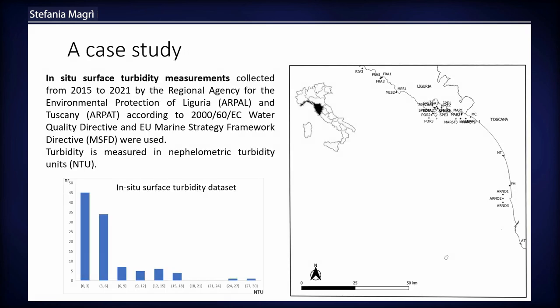The aim of the study was to retrieve turbidity information in our study area, located in the North Tyrrhenian Sea, including the Liguria and Tuscany regions. It is a very complex area from the turbidity point of view, encompassing many different sources. In the northern part there is a marine protected area — supposed to have very clean water. But we also have La Spezia harbor, two river mouths — the Magra and Arno — and another harbor at Livorno. So it's a very complex system.